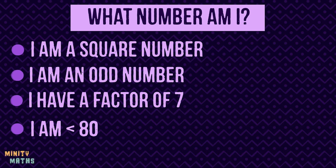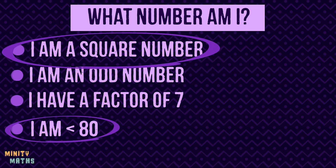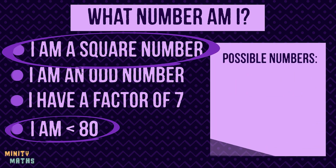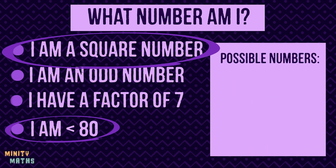In this case we could start with these two clues and list all the square numbers that are less than 80. If we were to start with odd numbers under 80, we would have to write out a much bigger list.